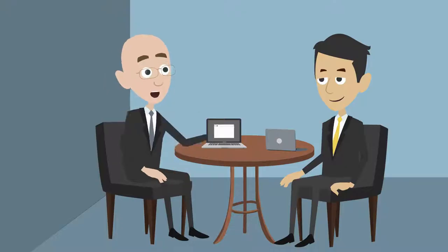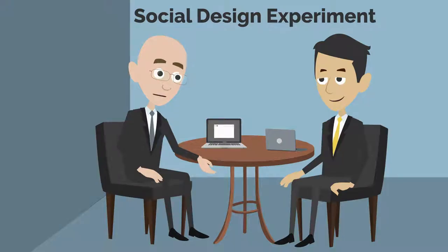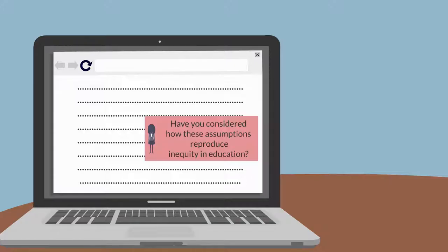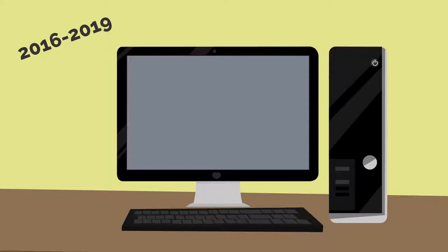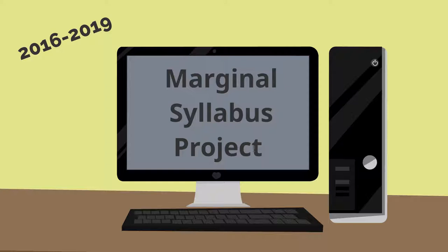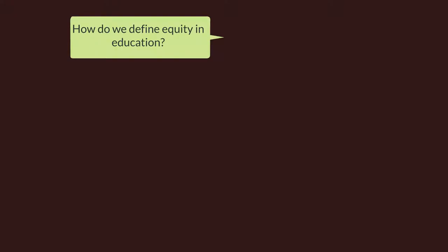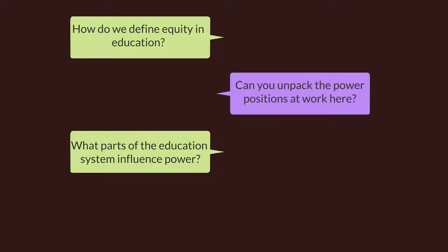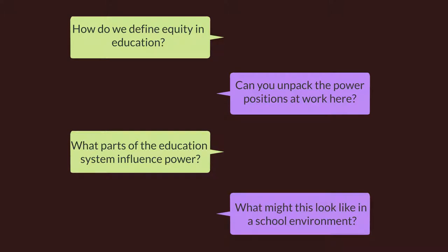In our study, we introduced a social design experiment to contextualize how educators used web annotation to discuss educational equity. Since 2016, the Marginal Syllabus Project has embraced social design experiment methodology to convene and sustain openly accessible online conversations with educators about equity in education. We studied a particular case of educator learning within the Marginal Syllabus.